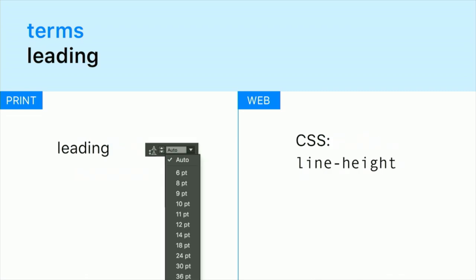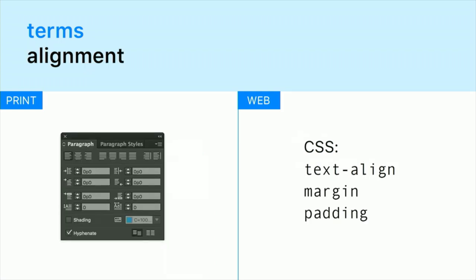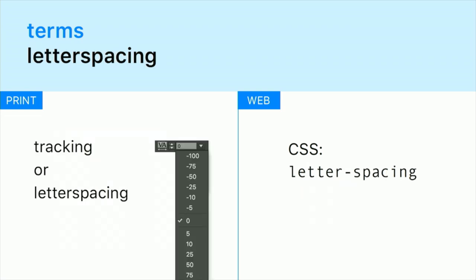Leading — that's something we talk about a lot. In CSS it's line-height. With alignment in CSS it's the familiar markup text-align, and then you have to figure margin and padding to get it right. Letter spacing is tracking for print, and for the web it's letter-spacing.